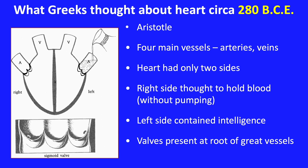Based on animal studies, the Greeks knew that the heart had four main vessels consisting of arteries and veins, but they thought the heart had only two sides. The right side was believed to hold blood but without pumping it. Intelligence, as Aristotle envisioned, resided in the left side of the heart. He even tried to prove this by demonstrating that water poured into the aorta would not enter the heart. Valves were present at the root of the great vessels. It is speculated that the rationale for these ideas was that pumps had not yet been invented — Archimedes did not invent the water screw until nearly 100 years later.